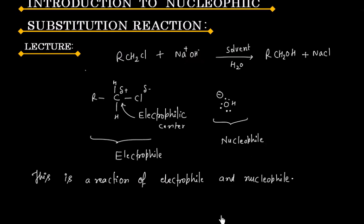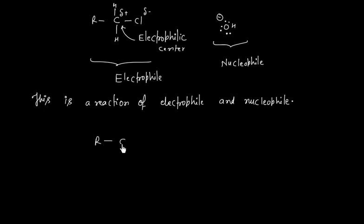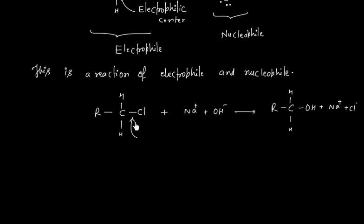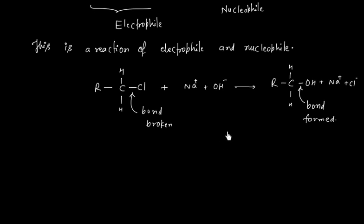If you see the bond changes in this reaction, the carbon-chlorine bond has broken and a new bond between carbon and oxygen is formed. Now, how does the bond breaking and bond forming process occur?